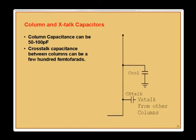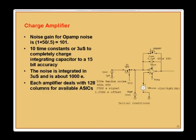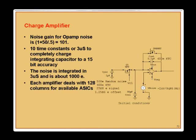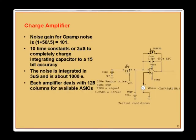Column capacitance can be 50 to 100 picofarads; the longer the column, the larger the capacitance. Cross-column capacitance can be a few hundred femtofarads. With 0.5 picofarads on the pixel side and 50 picofarads on the column side feeding into an op-amp, the noise gain is 1 + Z-F/Z-sub-i, meaning column capacitance is one of the biggest sources of electronic noise in the system.